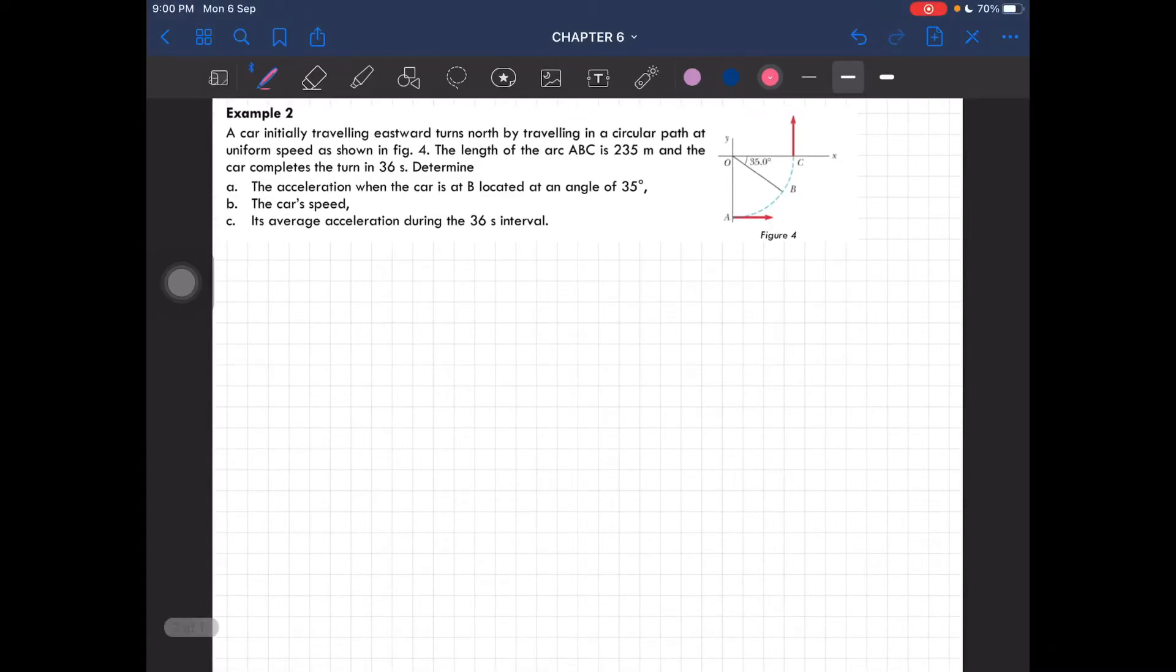Alright, Example Number 2: A car is initially traveling eastward, turns north by traveling in a circular path at uniform speed. The length of arc ABC is 235 meters, and the car completes the turn in 36 seconds.